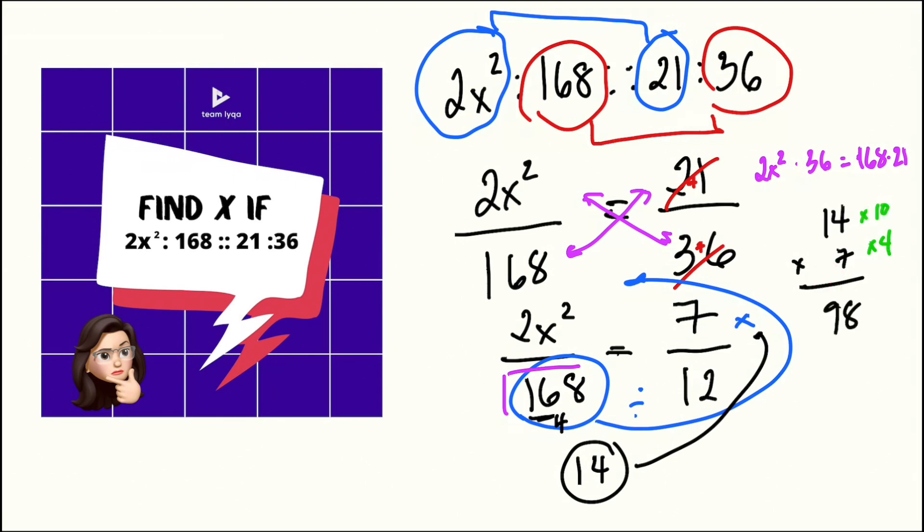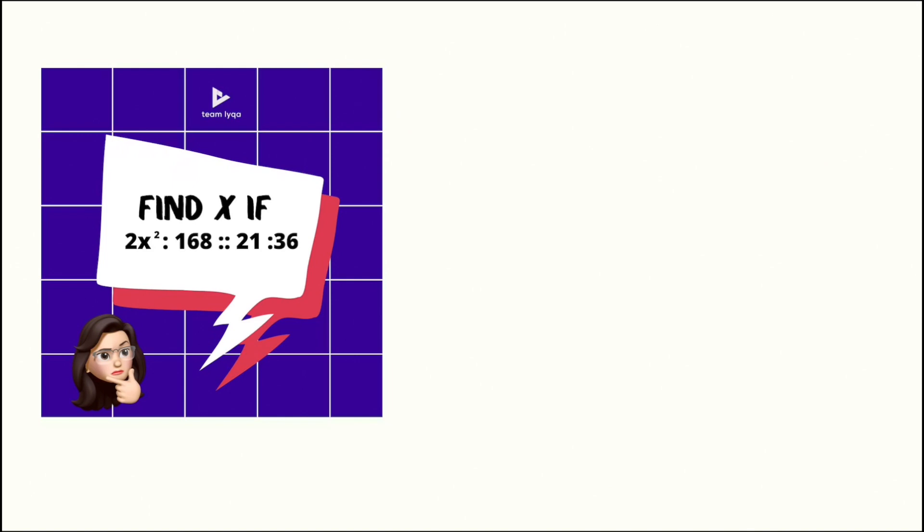Again, you can do it like this, or you can do it like that. Both will give the same answer, 98. So what happens is we have our 2x squared is equal to 98.